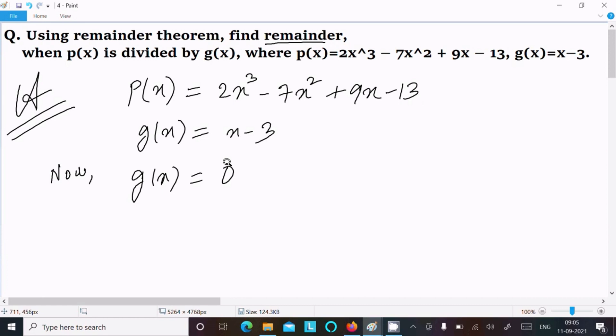Now here, g(x) equals 0. Then we can get x minus 3 equals 0, and the x value is 3.